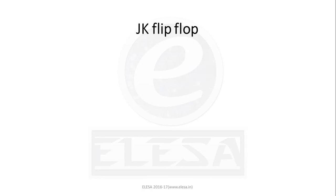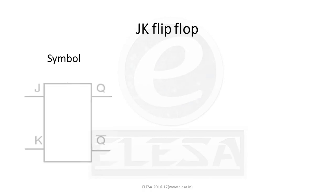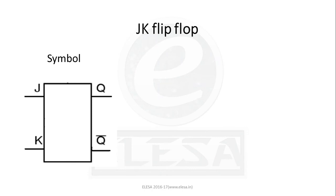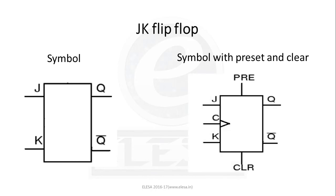The last flip-flop in this session is the JK flip-flop. JK flip-flop is very versatile and most widely used. The D and T flip-flops we have seen have a single input, but the JK flip-flop has two inputs: J and K. The function of the JK flip-flop is identical to that of the SR flip-flop, except that it has no invalid state like the SR flip-flop. One symbol includes additional preset and clear inputs. If a constant 1 is held on the preset input, the flip-flop will remain in the Q equals 1 state regardless of other inputs.